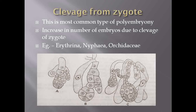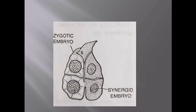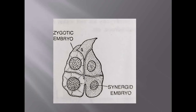Here we can see the embryo formed due to zygotic division and the embryo formed due to the synergid cell. These represent two different origins of embryo within the same seed.